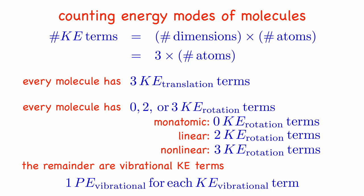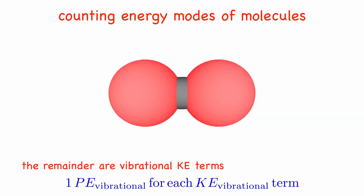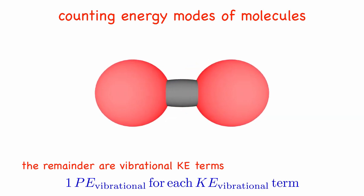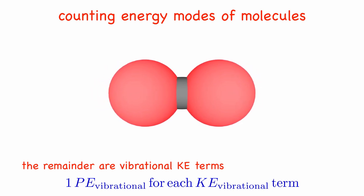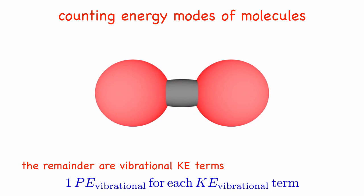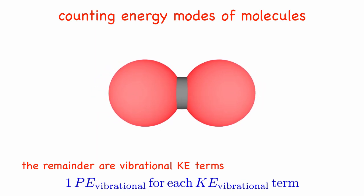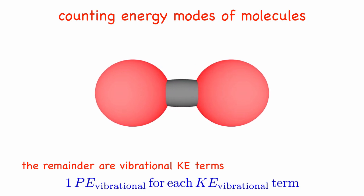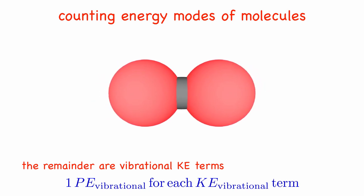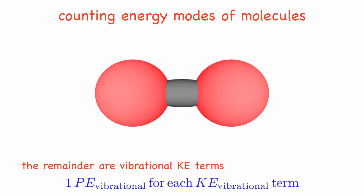A vibrational kinetic term means that there is some motion, like a mass on a spring, so that the vibrational kinetic energy is oscillating up and down. For energy to be conserved, we know that there must be a potential energy that goes up as the kinetic energy goes down. It is the force associated with the slope of the potential that is responsible for slowing the atom down or speeding it up. For every vibrational kinetic term that we find, there must be a corresponding potential energy term.